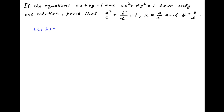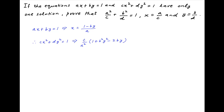We are given the equation ax plus by is equal to 1. This implies that x is equal to 1 minus by upon a. We are also given that cx squared plus dy squared is equal to 1. Substituting the value of x obtained above, we get c upon a squared multiplied by, in brackets, 1 plus b squared y squared minus 2by, plus dy squared is equal to 1.